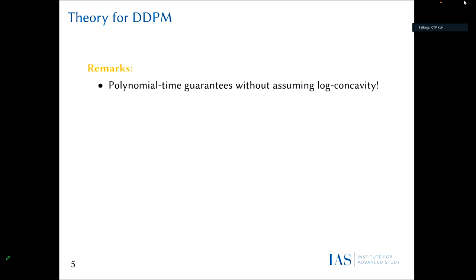The most interesting part about this theorem is that you get iteration complexities that scale polynomially in the problem parameters without assuming the data distribution is log-concave or satisfies a log-Sobolev inequality — assumptions needed in MCMC theory for fast mixing. So even if your data distribution is multimodal or otherwise challenging for standard MCMC samplers, diffusion models can overcome this. The reason is they perform an annealing process: the forward process turns your distribution into an isotropic Gaussian, and the reverse process slowly recovers it. The catch is that the score function must be accurately learned.